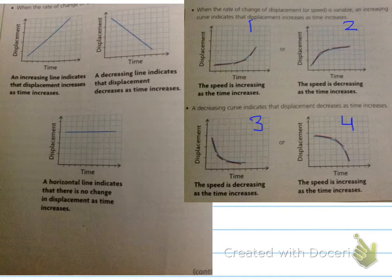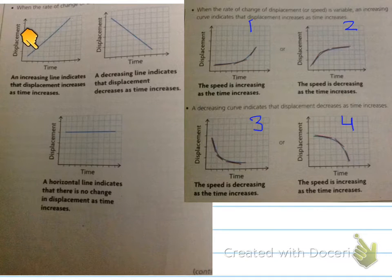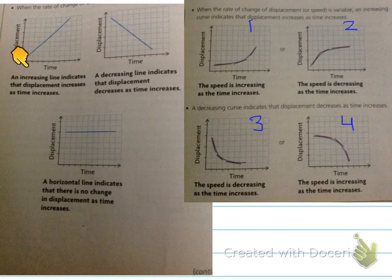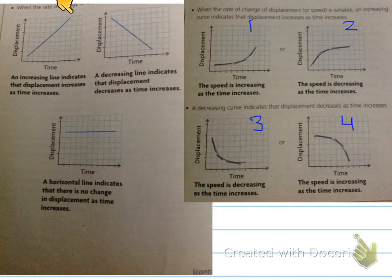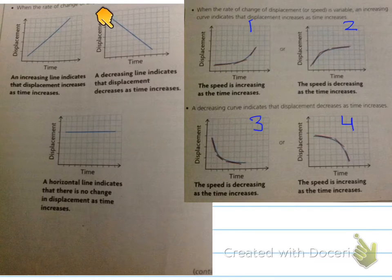Looking at these graphs, an increasing line indicates that the displacement increases as time increases. The speed here is constant because the rate of change on this line is the same — so even though displacement and time are both increasing, the speed is constant because the slope of this line is constant throughout. The same can be said for a decreasing line: as time increases, displacement decreases, but the speed is still constant because the slope is the same.